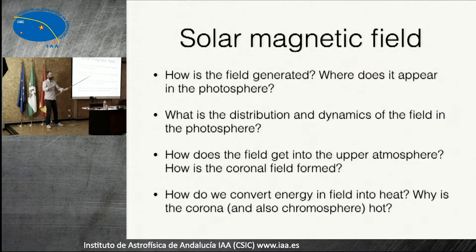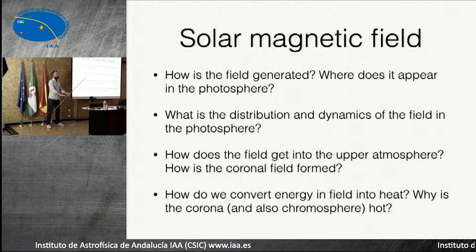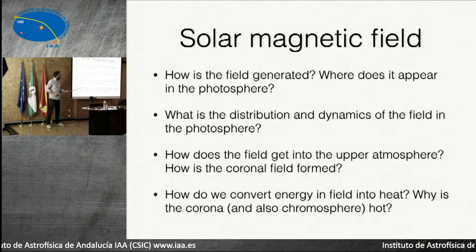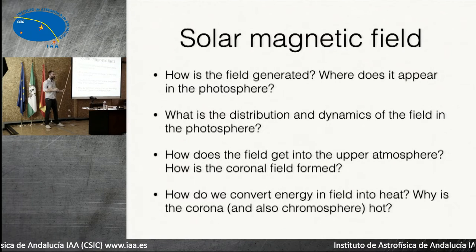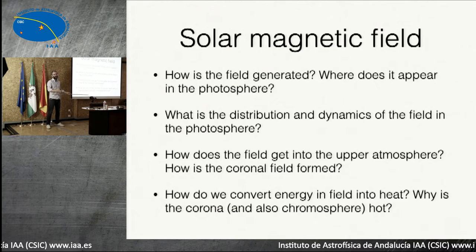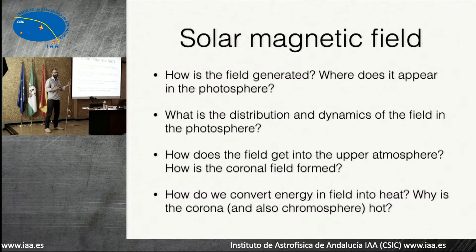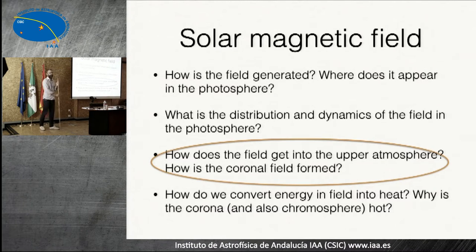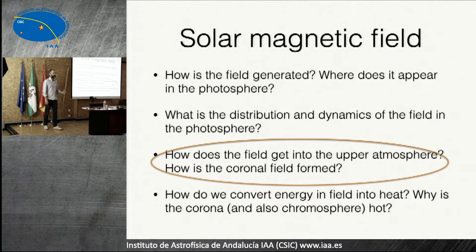What can the movement of the field in the photosphere tell us? And once in the photosphere, how does the field continue up through the photosphere and into the upper atmosphere? How is the coronal field formed? Because it's not obvious that the field just goes through the surface and gets out — it has to get there somehow. And finally, once we get there, how do we convert the energy in the field into heat to heat the chromosphere and the corona? Those are the basic questions in solar physics. I'm going to concentrate on how field gets into the atmosphere and how the coronal field is formed.